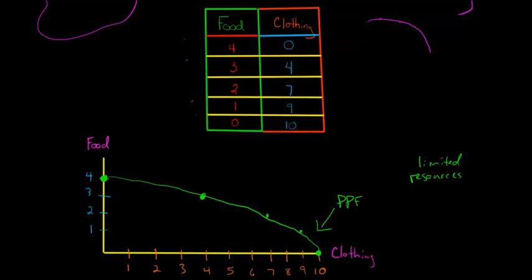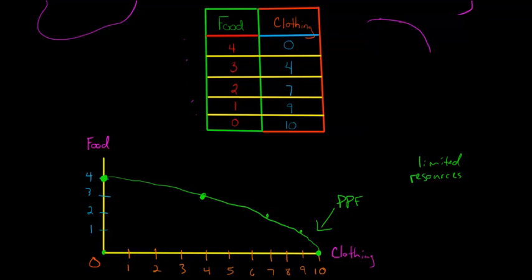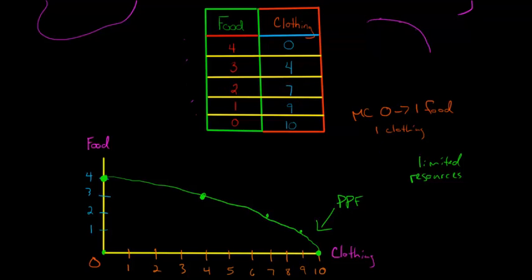If you think about this, to go from zero units of food to one unit of food, how much clothing do we give up? Looking at the table: if we produce no food and then decide to produce one unit of food, we give up one unit of clothing. So the marginal cost of going from zero to one unit of food is one unit of clothing. To get the second unit of food, we give up two units of clothing. And to get the third unit of food — going from two to three — we give up three units of clothing.